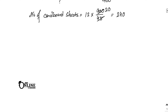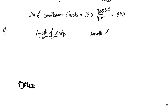Moving on to sum number 8: in a model of a ship, the mast is 6 centimeters high, while the mast of the actual ship is 9 meters high. If the length of the actual ship is 33 meters, how long is the model of the ship? Write down two columns: length of ship and length of mast.